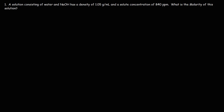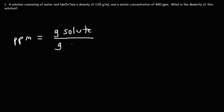First, we need to understand what this type of concentration represents. Parts per million is used to represent solutions with very low concentrations. The formula to get the concentration in parts per million is the grams of solute divided by the mass in grams of solution, times 10 to the 6.